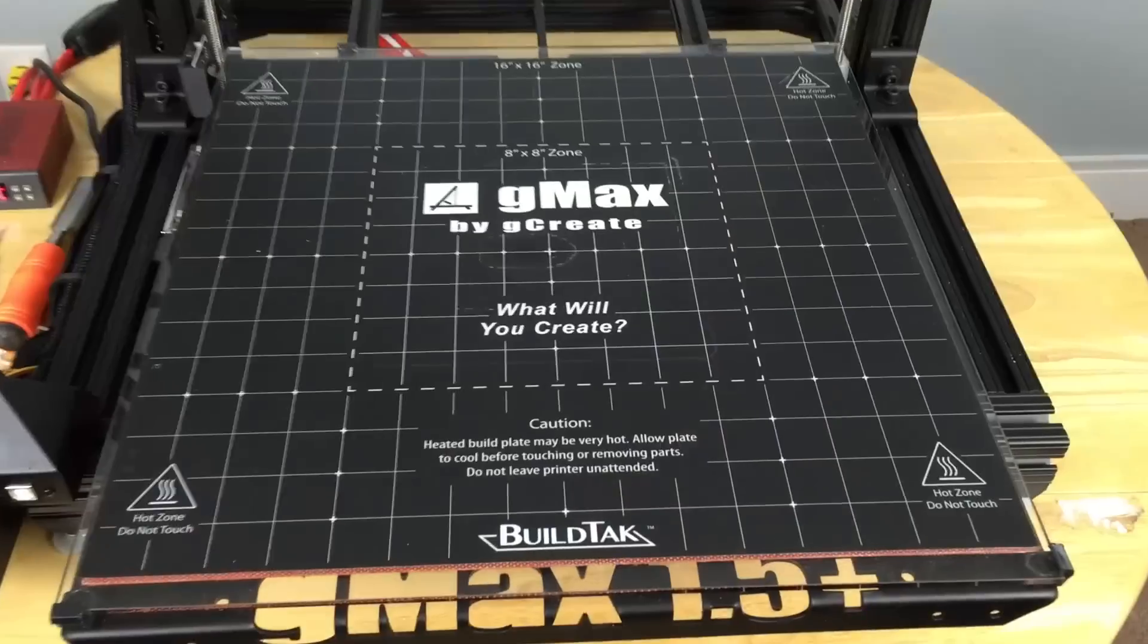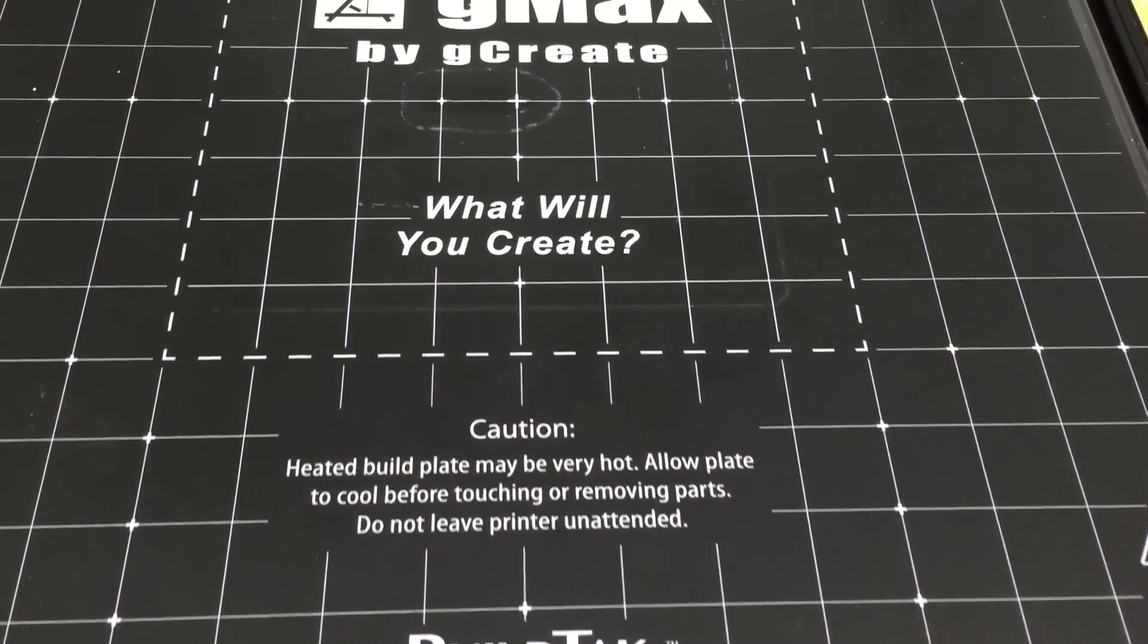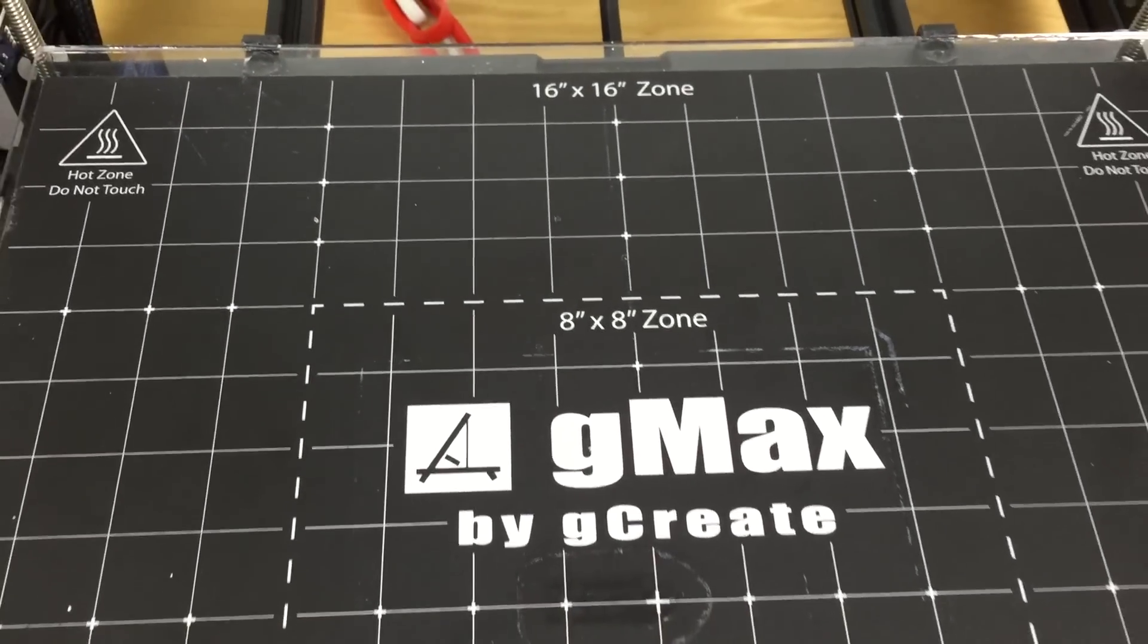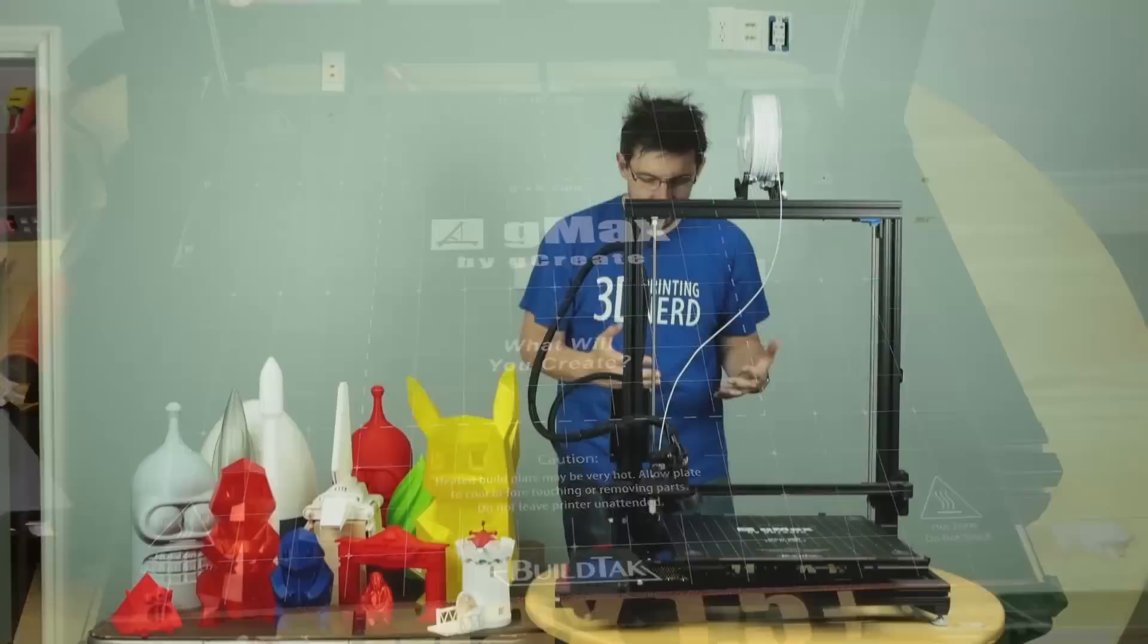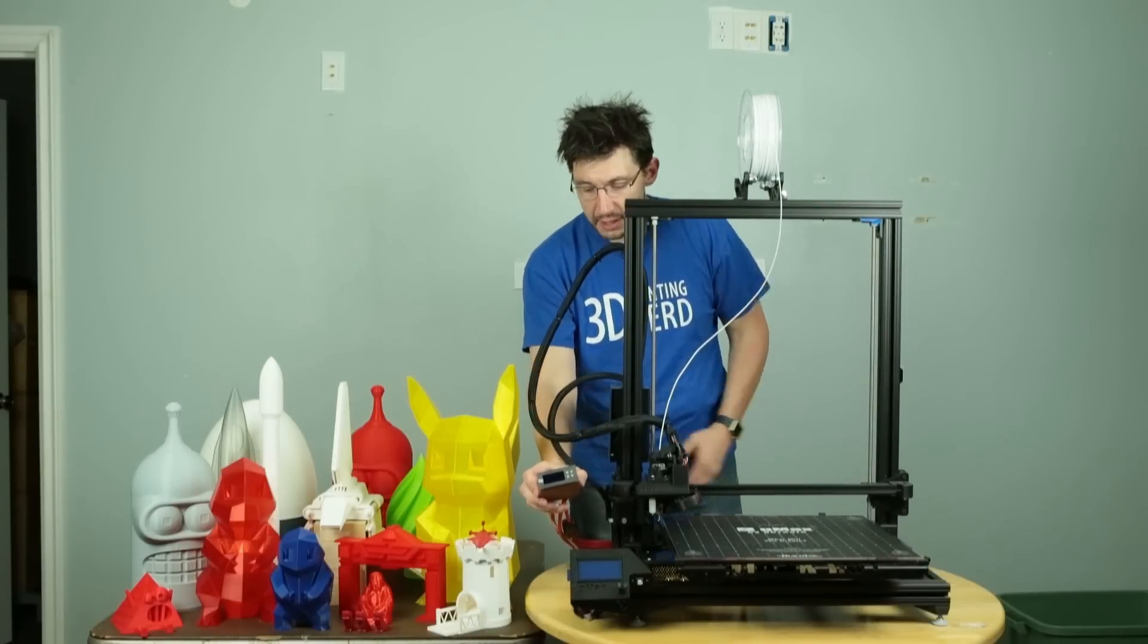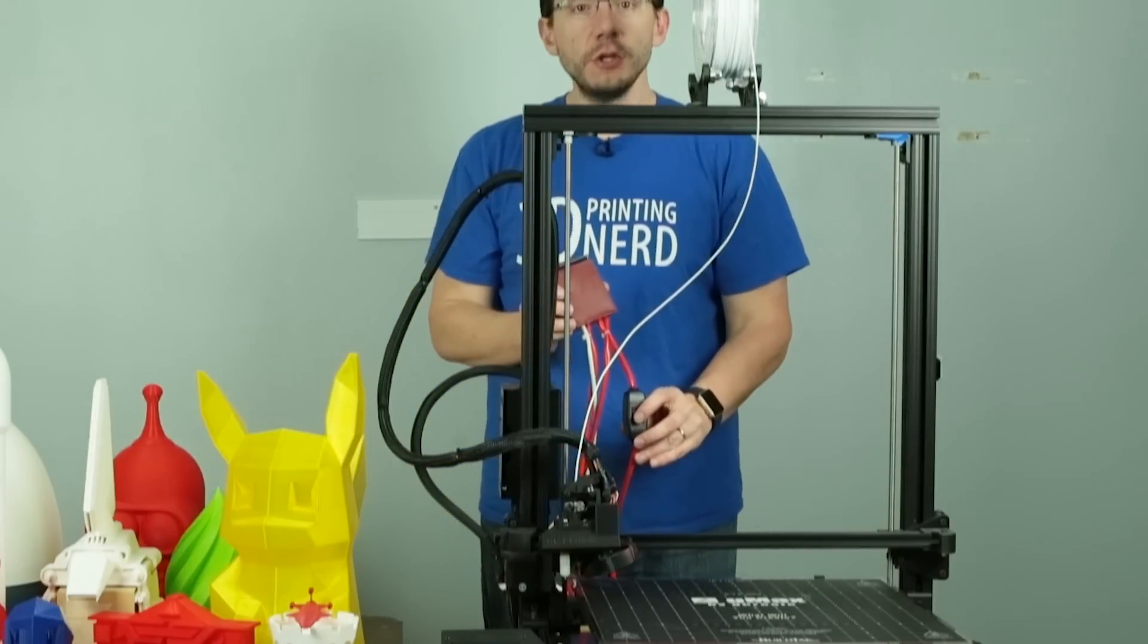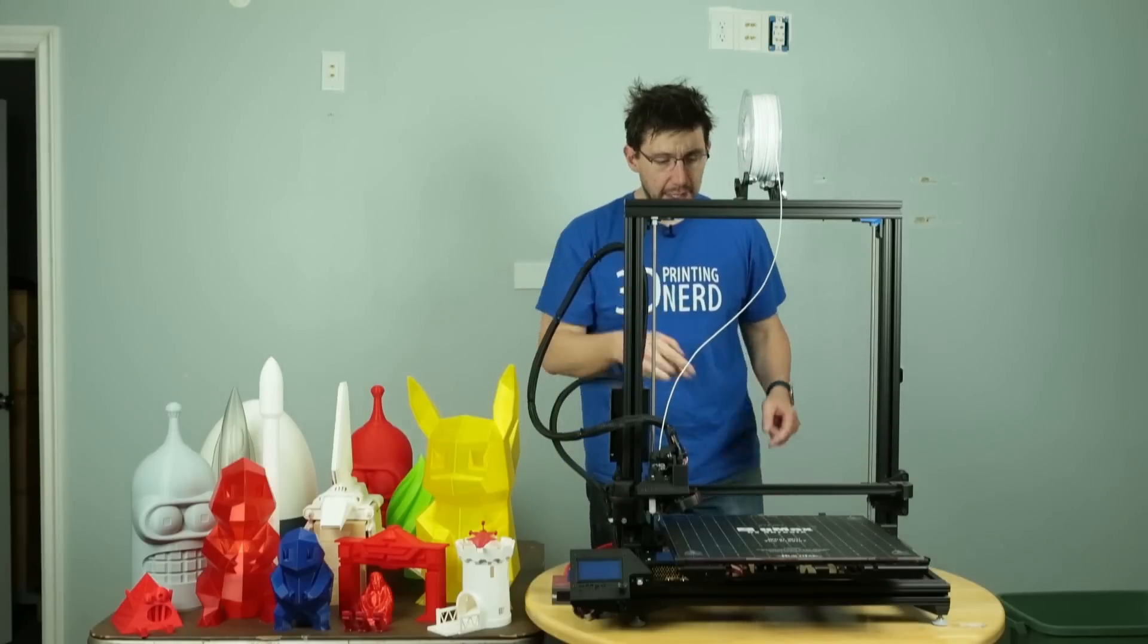Something brand new just being announced, I hear, is right here. This is the G-Max 1.5 XT Plus heated build plate. It is 16 inches by 16 inches of up to 100 degrees centigrade heated build plate awesomeness. The control box is right here. What's interesting about this heated build plate is this switch right here.